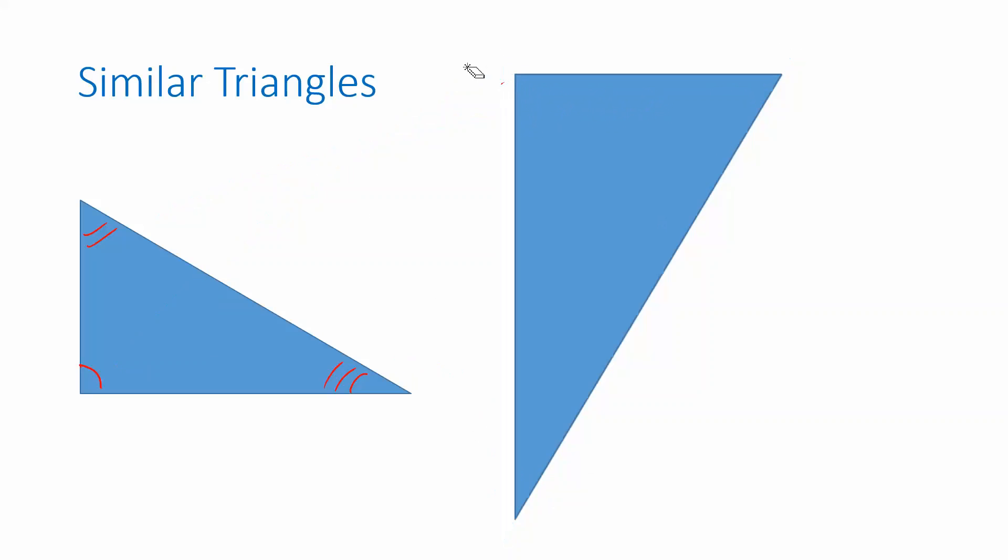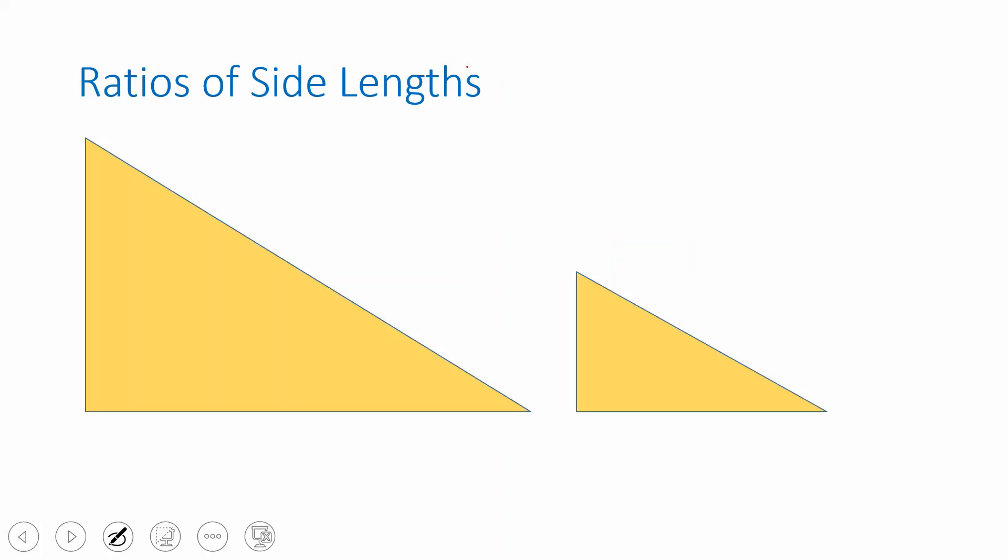Same thing happens if I shrink it, or even if I rotate it around. So, what do we know about triangles that are similar? If the side lengths are not necessarily the same, do we know anything? It turns out we do.